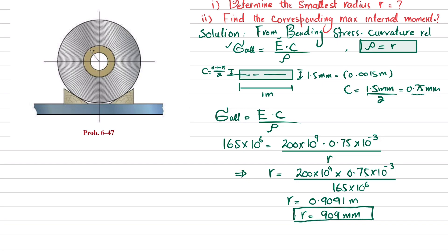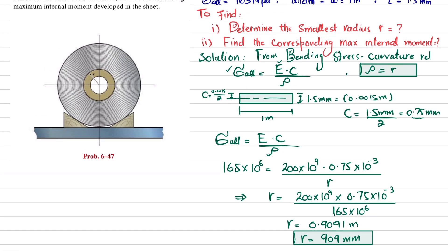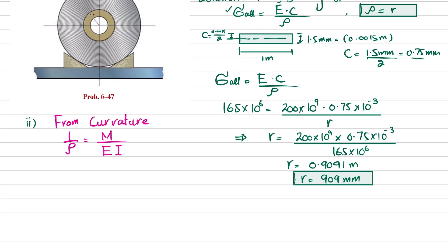This is the answer to the first part — the smallest radius r = 0.9091 m. Now moving to the second part, where we find the corresponding internal moment. From the curvature equation, 1/ρ = M / (E × I), where M is the internal moment, E is modulus of elasticity, and I is the second moment of inertia.